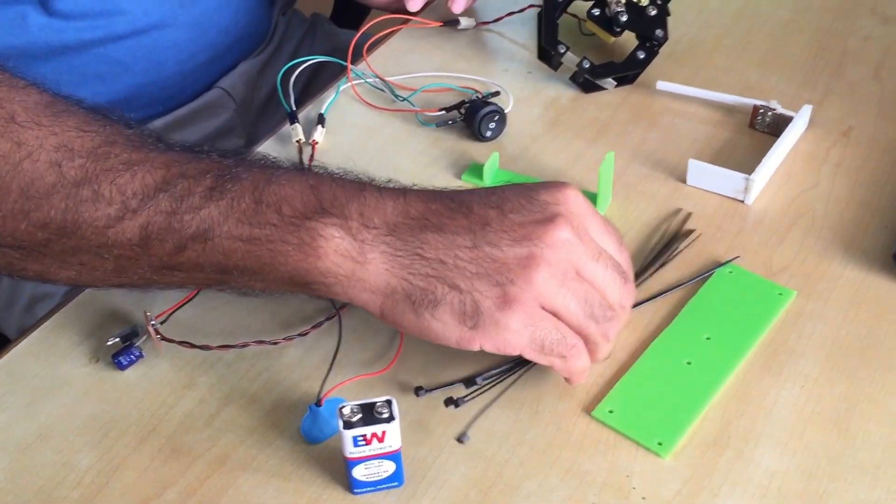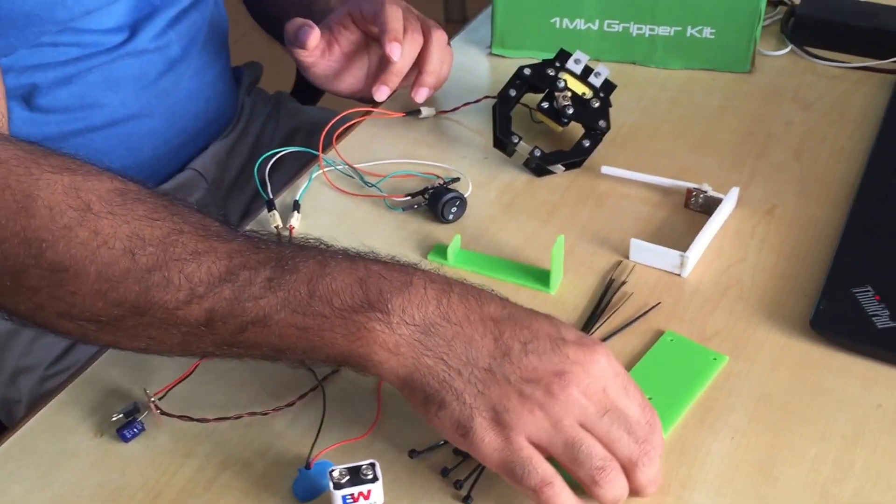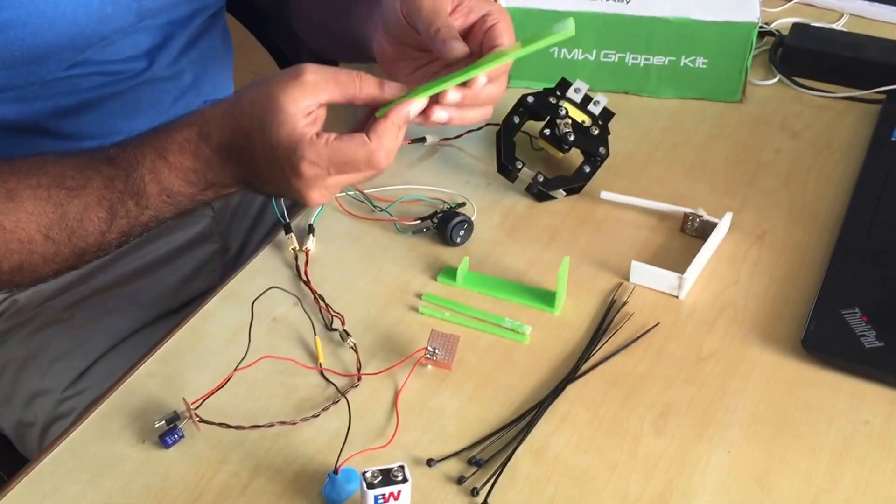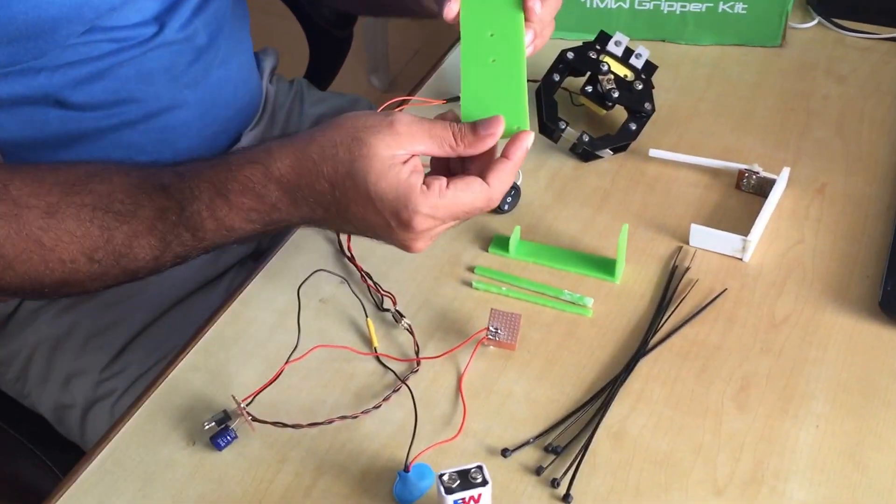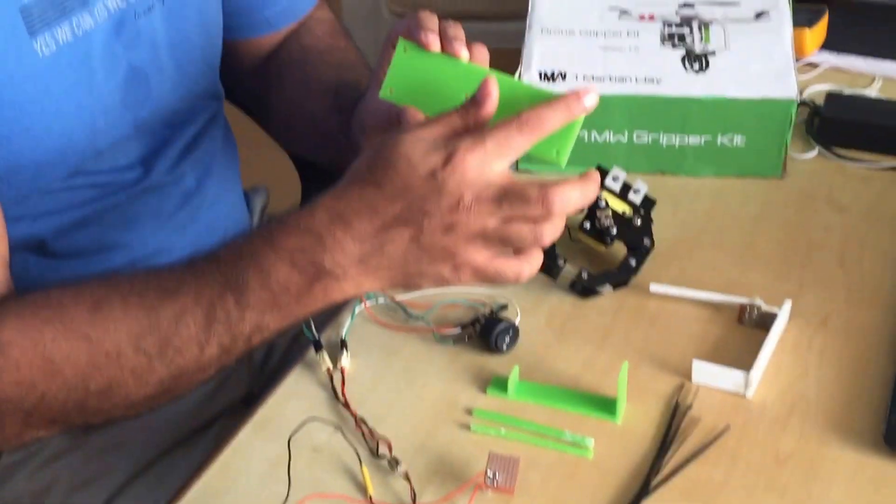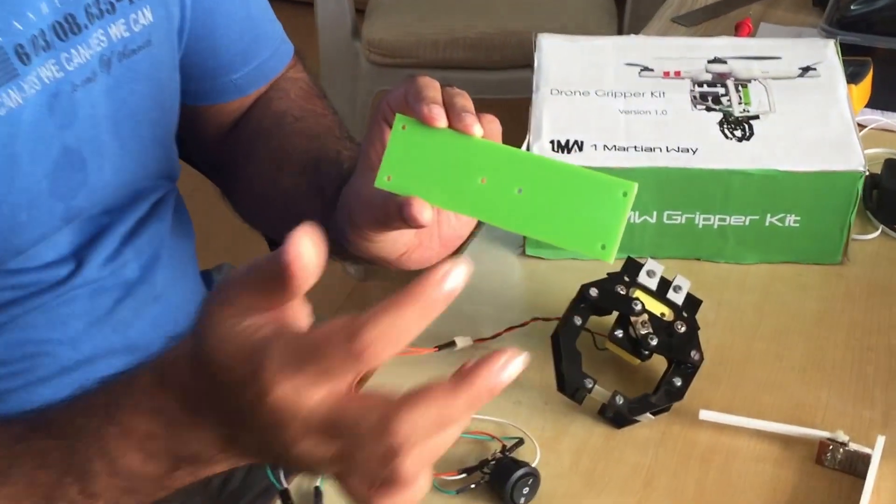You also get some tie clips like these to mount the gripper on the drone. So I'll just show you how it is mounted. This is the plate, it has 6 holes: 1, 2, 3, 4, 5, 6.